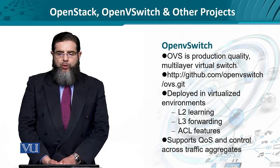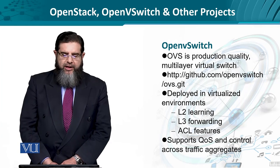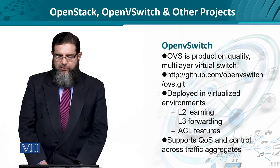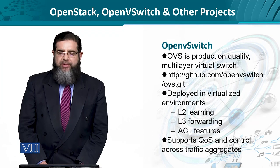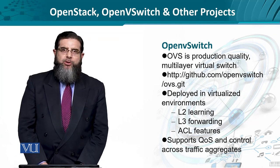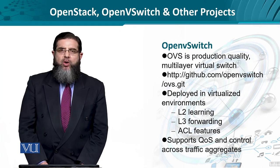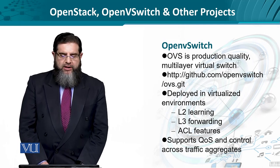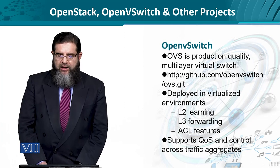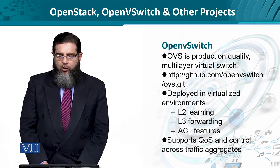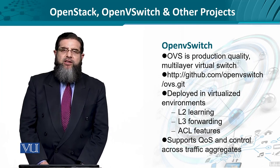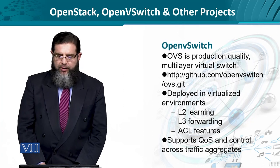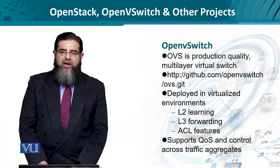This leads us to another project known as the Open vSwitch — the virtualization of a physical switch. OVS is basically a multi-layer virtual switch, meaning it can operate on upper layers as well, starting at layer 2. The Git repository with all the details is available via the URL. OVS is deployed in virtualized environments for layer 2 and layer 3 forwarding, that is IP-based forwarding, and some access control features are also implemented.